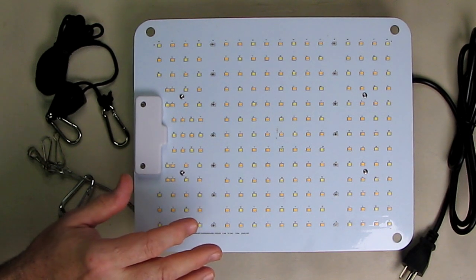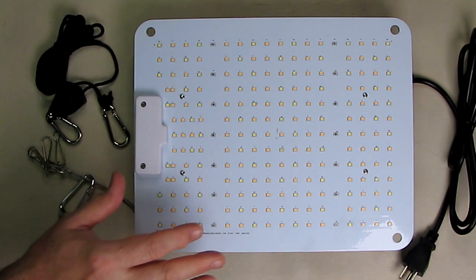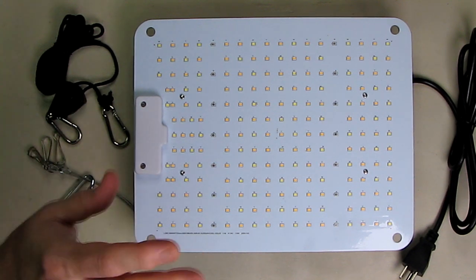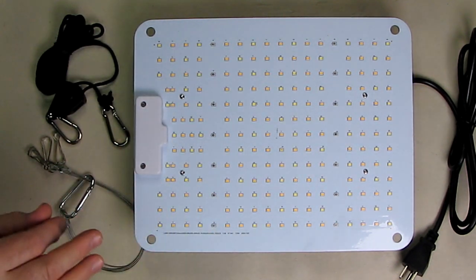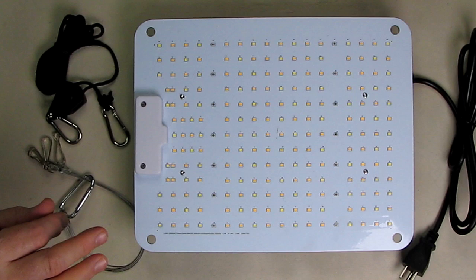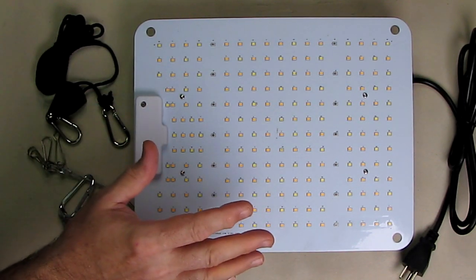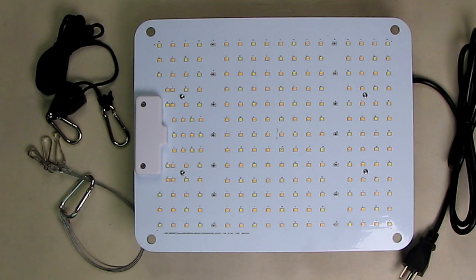We're going to test that with some seedlings. The efficacy is 2.7 micromoles per joules. The life expectancy of these 222 SMD LEDs is 50,000 hours, which is like a lifetime. This LED light increases yield while decreasing electricity costs.